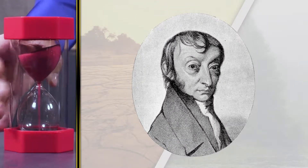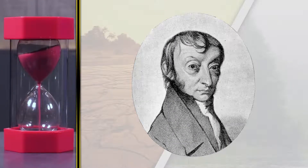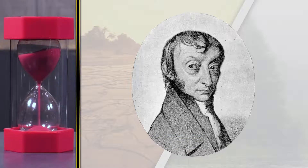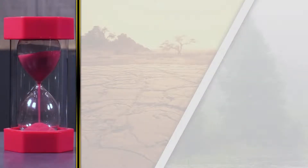In the early 19th century an Italian physicist named Amadeo Avogadro developed an important scientific law now known as Avogadro's principle. It states that equal volumes of gases under the same conditions of temperature and pressure will contain equal numbers of molecules. Okay, that's step one.